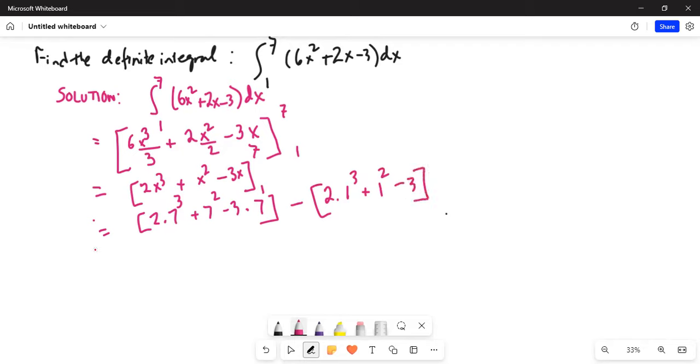This is equal to 2 times 7 cubed. You use your calculator to find the expression. So, do 2 multiplied by 7 exponent 3 is equal to 686 plus 7 square is 49 minus 3 times 7 is 21 minus 2 times 1 cubed is 2, 1 square is 1 minus 3.